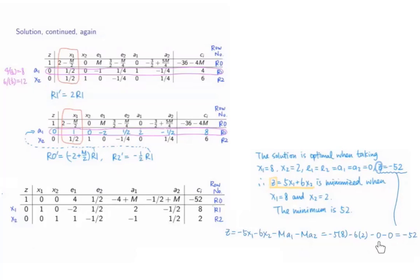And it corresponds to the conclusion that if we take z to be 5x1 plus 6x2, then the value of this z is minimized, and the minimum value is positive 52, which is achieved when x1 equals 8 and x2 equals 2. Be careful that the two z expressions shown here are representing different objective functions.